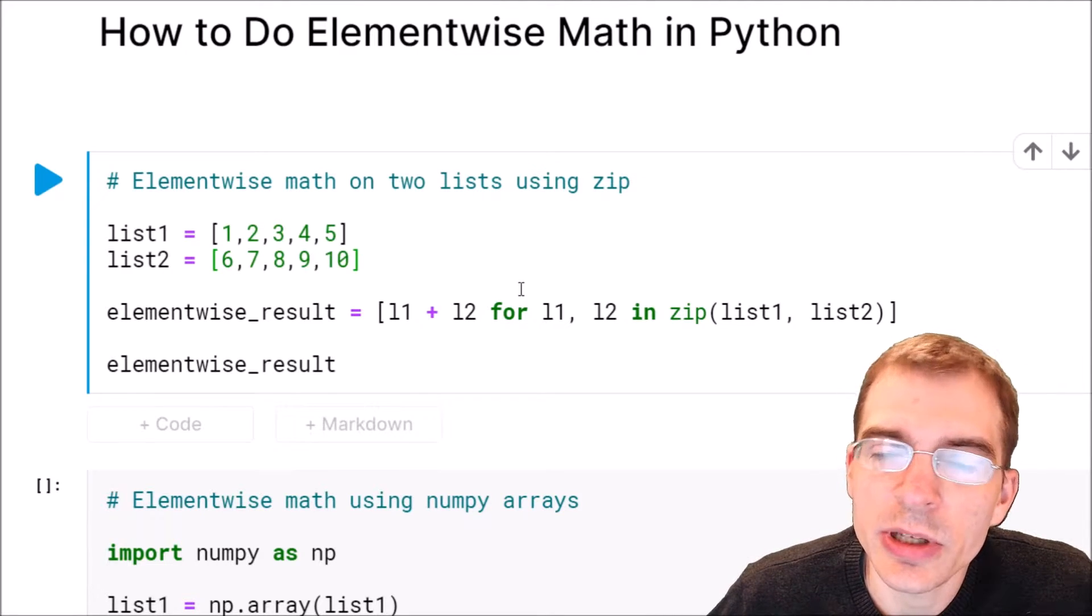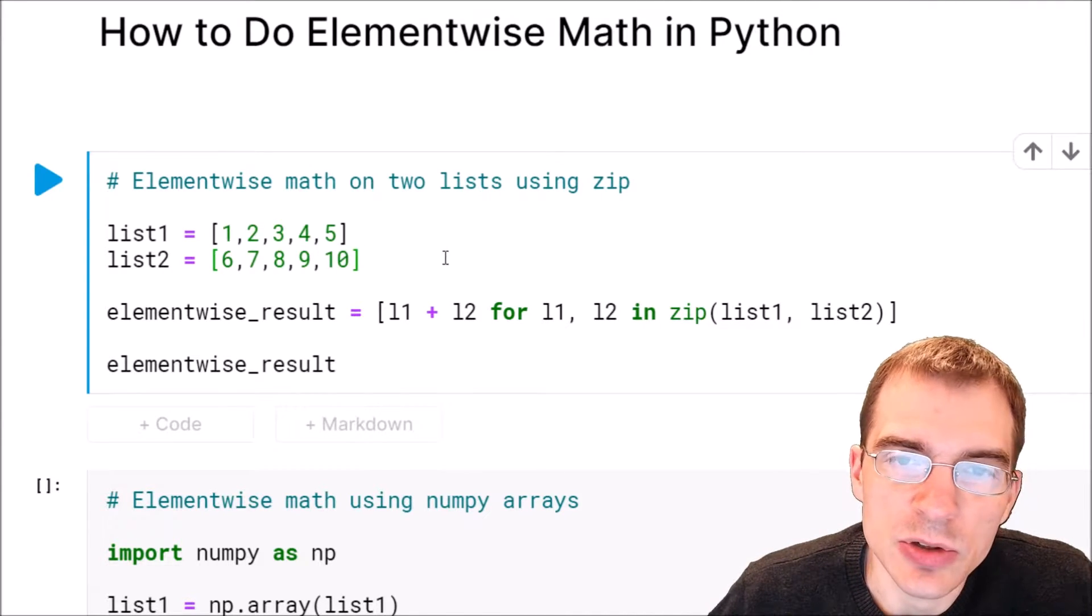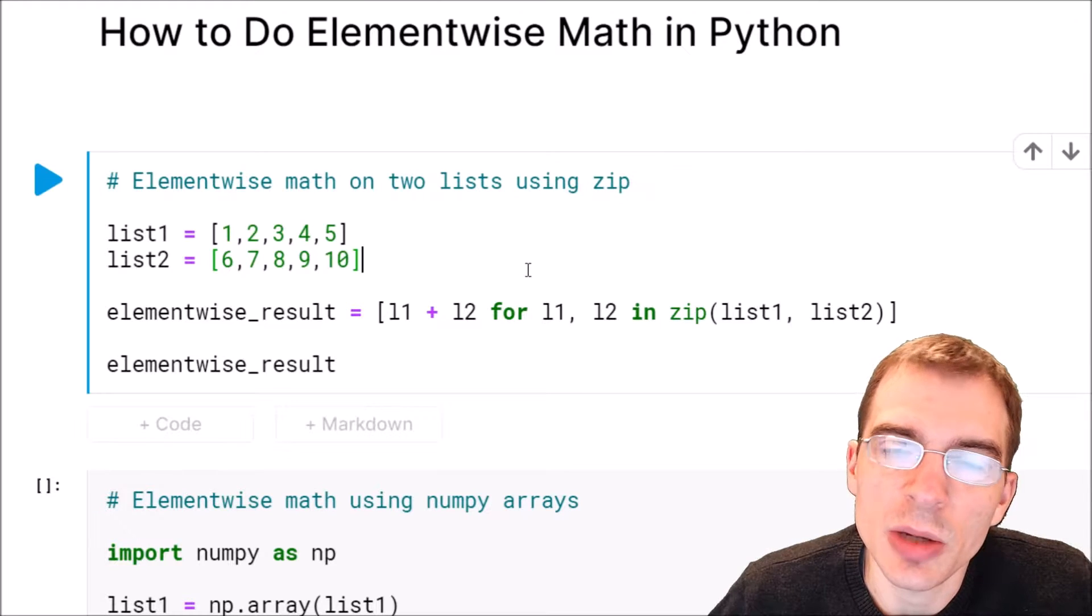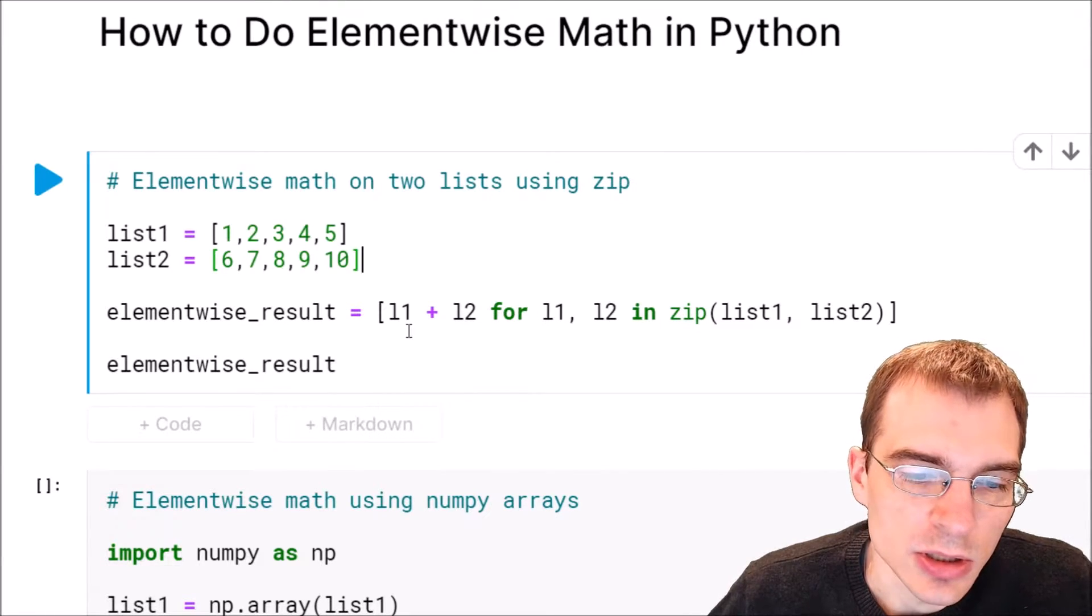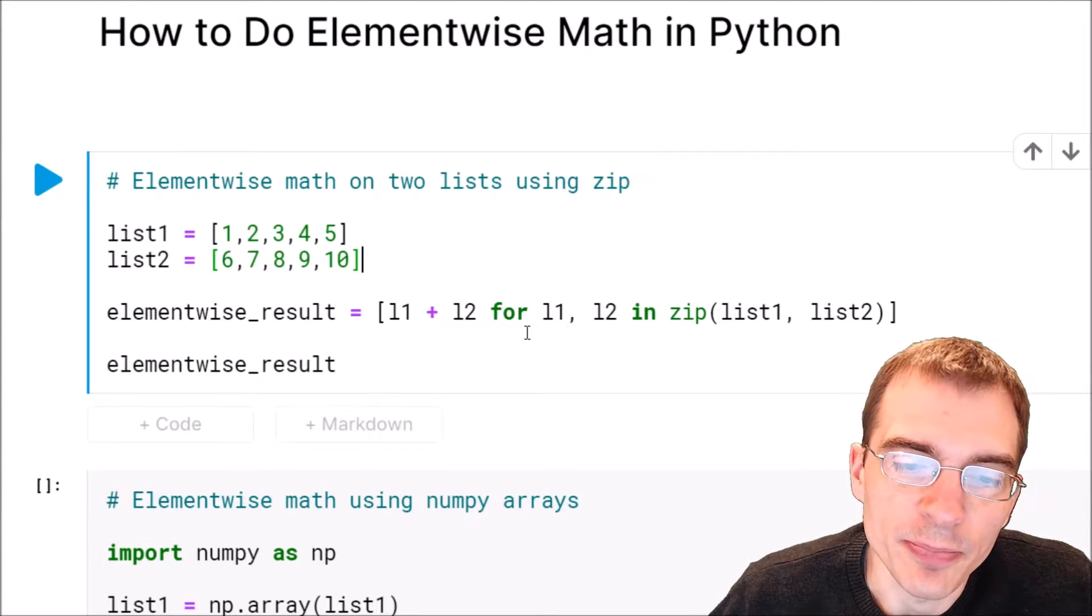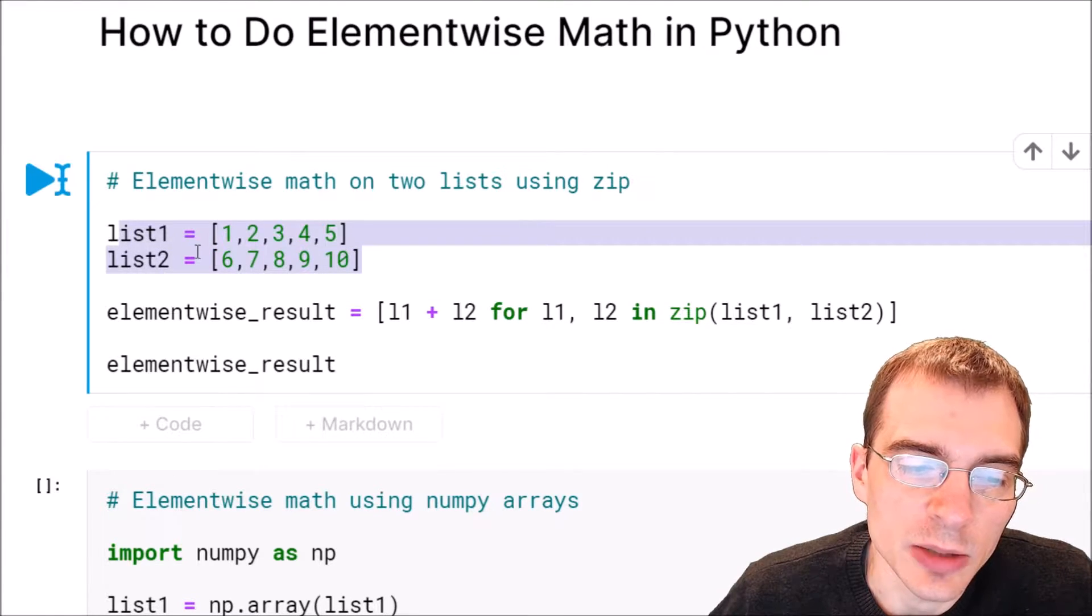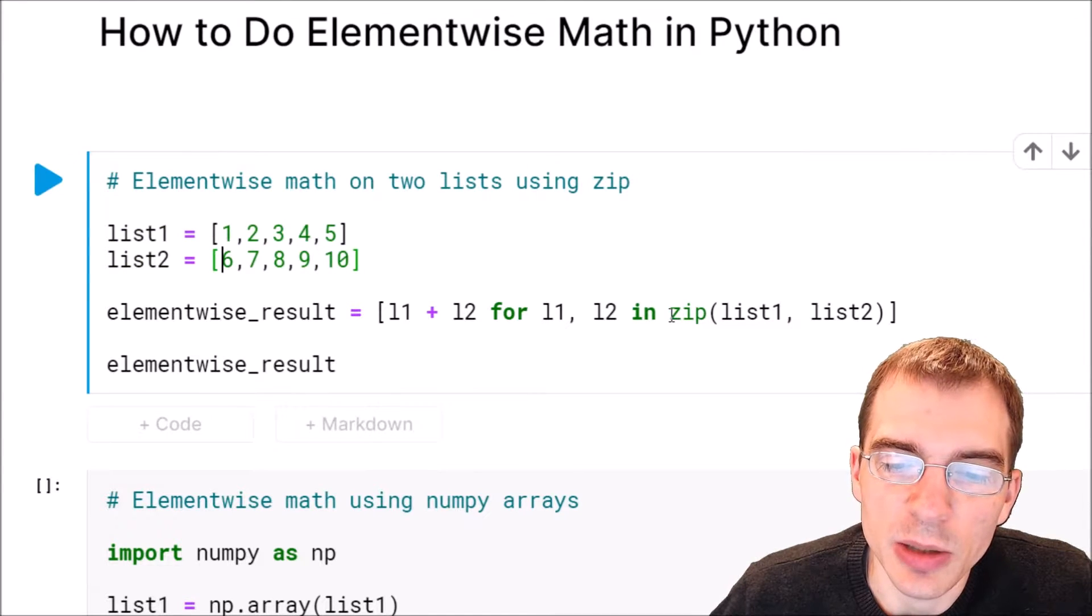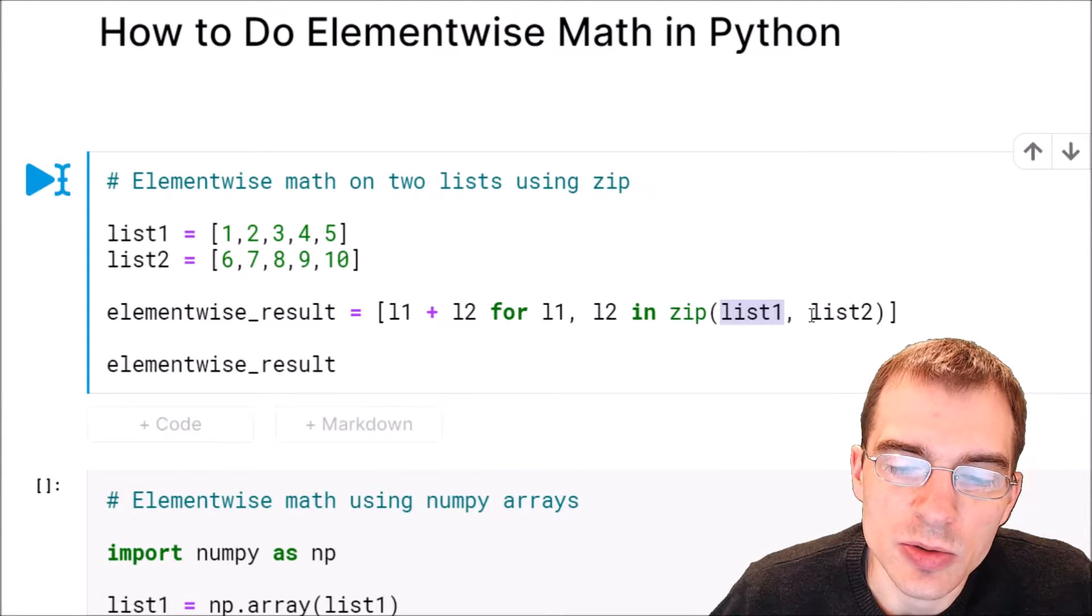One way we can do this sort of element-wise math if we're given two lists is to use zip with a list comprehension. Here's an example of how we can do that. We take the two lists in question that we want to perform the element-wise math on, we zip them—so we say zip list 1 and list 2.